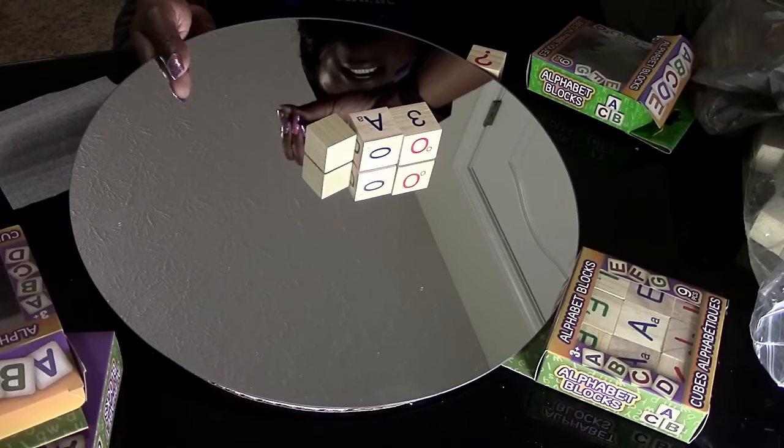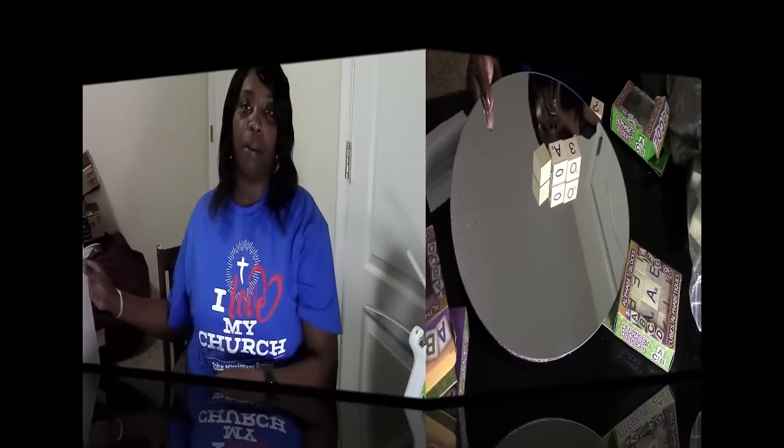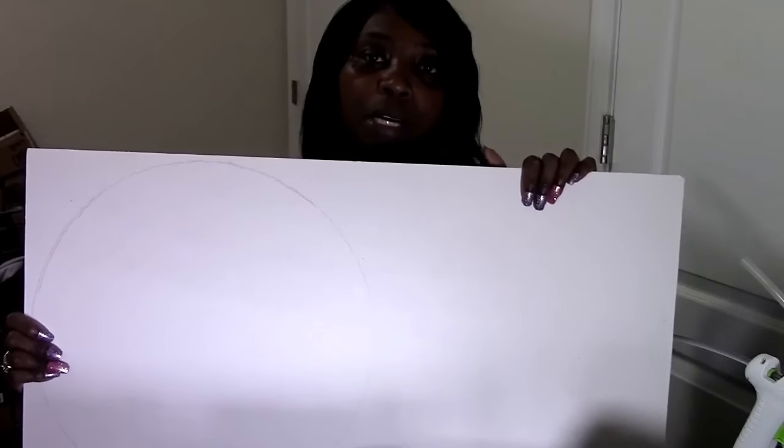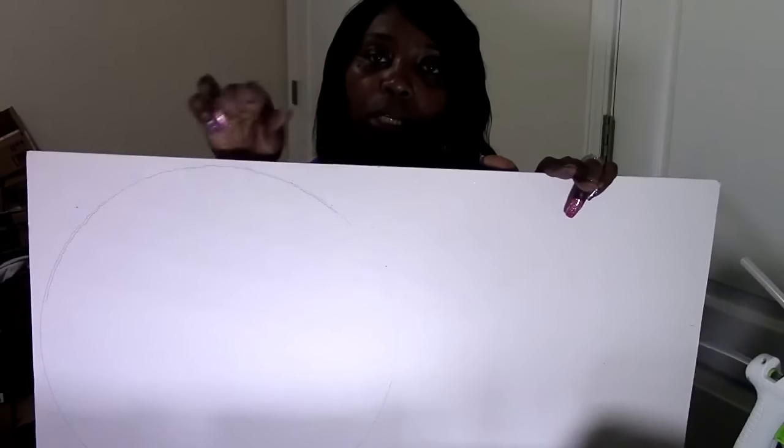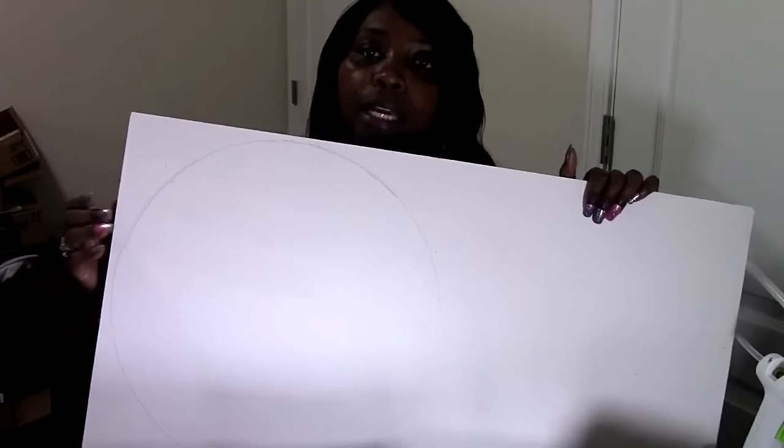Let's jump right into this DIY. The first thing you want to do is take your styrofoam board poster board and you want to find something. I need to correct myself, the mirror is a 14 inch mirror. So you want to get a border that's two inches around, so you want to find something that's 16 inches and you want to trace that circle and then you're going to cut that circle out.